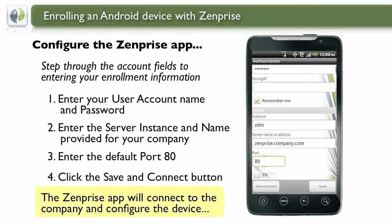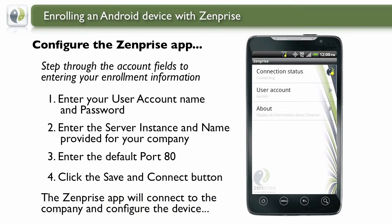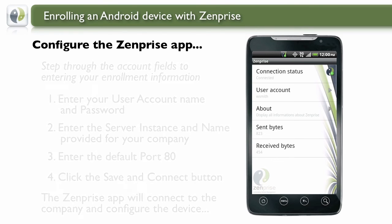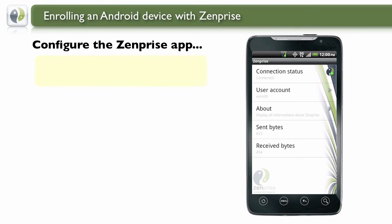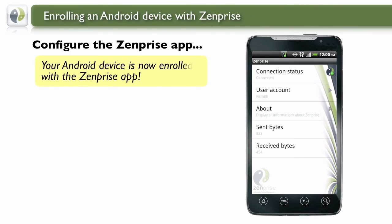Click Save and Connect when ready to continue. ZenPrize app will now connect to the server and configure your device with your company network settings. You'll see that the device is connecting and the connection status should show green when finished. Your Android device is now fully enrolled with the ZenPrize app.